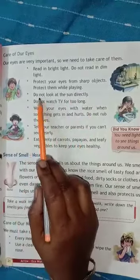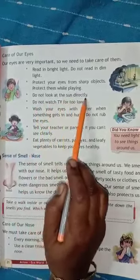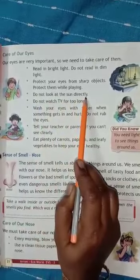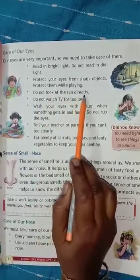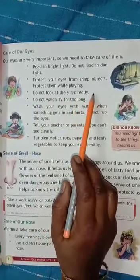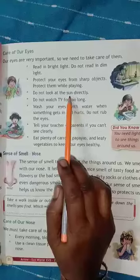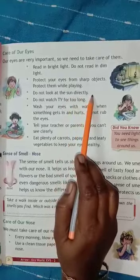Number 3 is do not look at the sun directly. You should not stand and look straight at the sun for a long time.